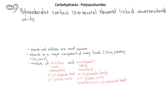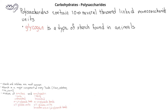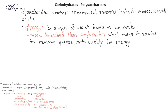Glycogen is a type of starch found in animals. It is more highly branched than amylopectin. One of the advantages of having a more highly branched source of glucose is that it's easier to remove many glucose units at once from the ends of the side chains. This allows animals to get glucose units much faster when they need it.